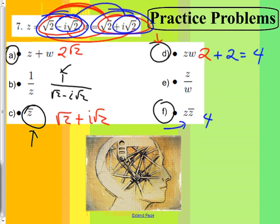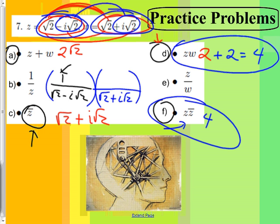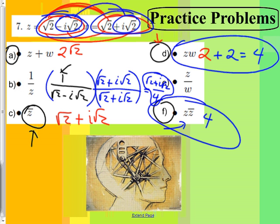Now going back to B: 1 over Z — but you can't leave it with square roots in the denominator. Multiply by the conjugate. We already know from our earlier work that when you multiply Z by its conjugate, the denominator comes out to four. The numerator has to be the conjugate, root two plus i root two. You could factor out the root twos, but root two won't cancel with four. So the answer is root two plus i root two, all over four.